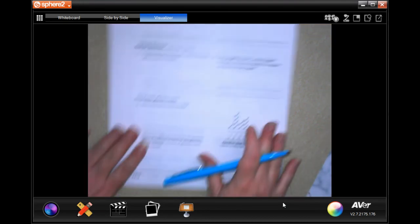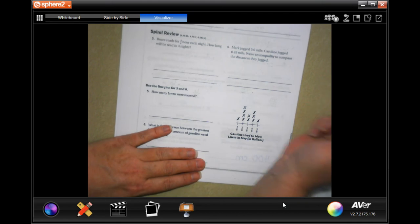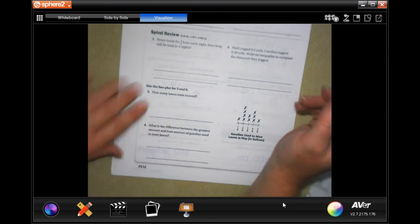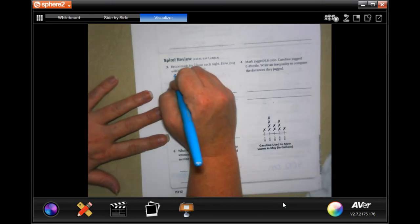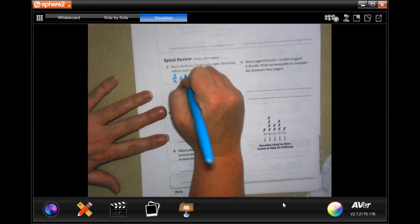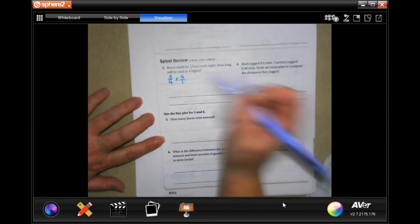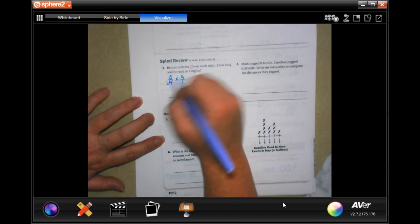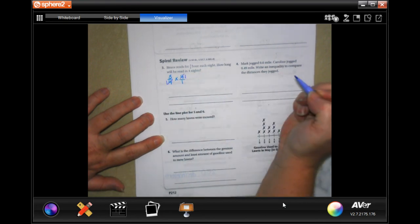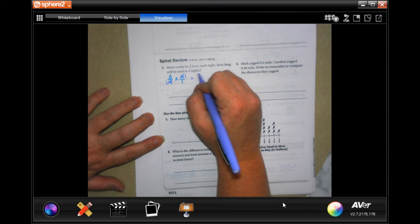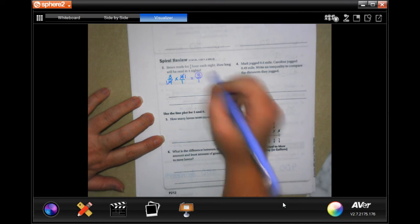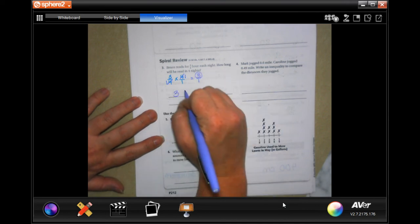We're going to do this for our review. Says Bruce reads for three quarters of an hour each night. How long will he read in four nights? Well, three quarters of an hour times four nights, and I want to put that four over one so that I have a fraction and I'm going to go ahead and reduce, which means the top is three and the bottom is one, so three hours.